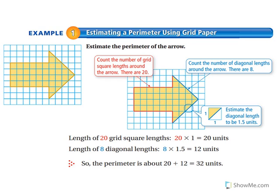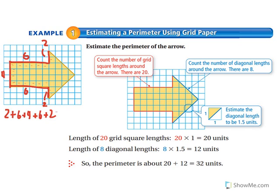The first thing we're going to do is look at our straight edges. Looking at the parts I'm highlighting right now, I can see I have 6 units, 2 units, 4 units, 6 units over here, and 2 over here. So I have 2 plus 6 plus 4 plus 6 plus 2, and if I add all of those units up, I end up getting 20.